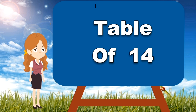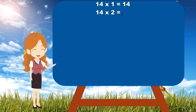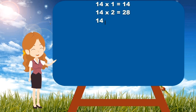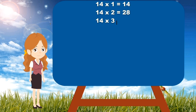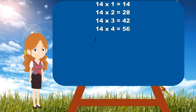Table of 14. Let's start. 14 times 1 is 14. 14 times 2 is 28. 14 times 3 is 42. 14 times 4 is 56.